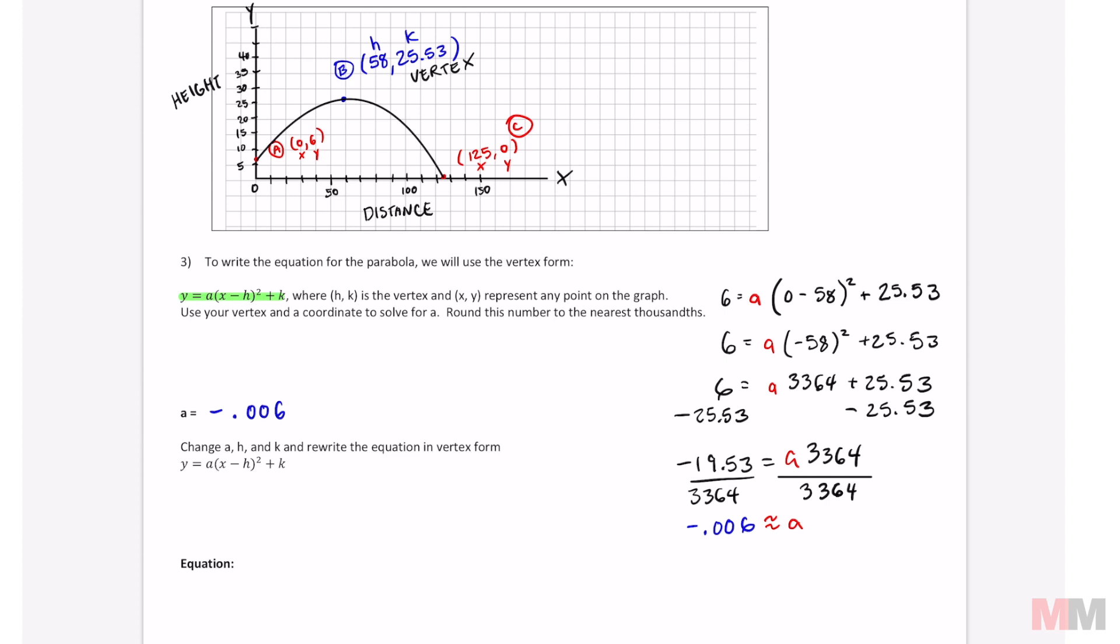To write the final equation in vertex form, we want to write the equation of this parabola. All we have to do is change A, h, and k. We're gonna leave y and x in there. We need the y and x there. And then we're gonna substitute once again. A lot of substitution today. A was negative 0.006. Parentheses, we're gonna keep the x there, minus my h, which was 58. Square that. Plus k: 25.53. And bada bing bada boom, there is my equation.